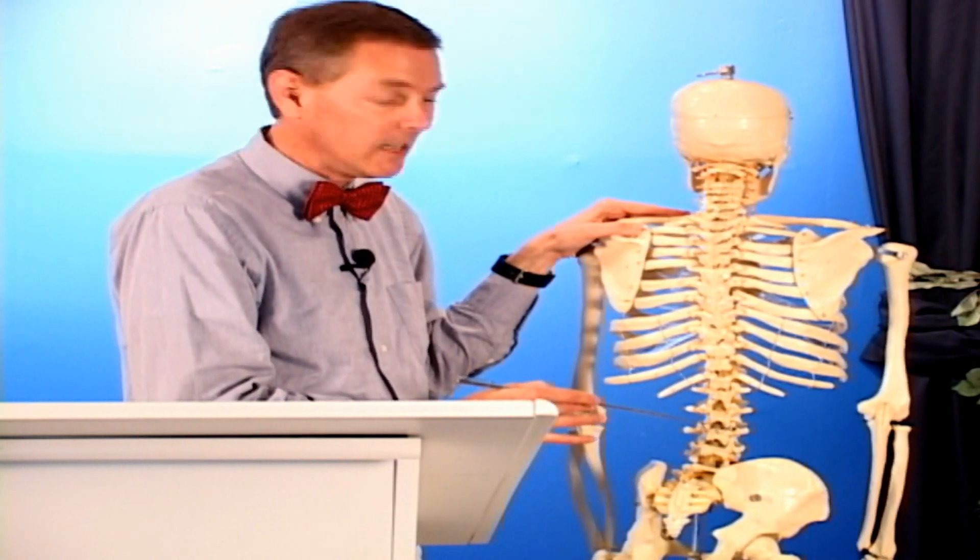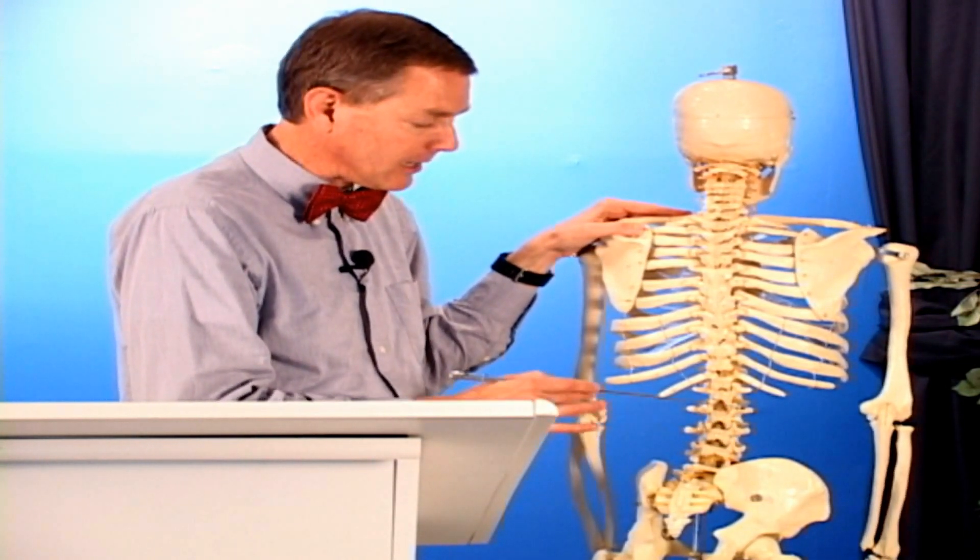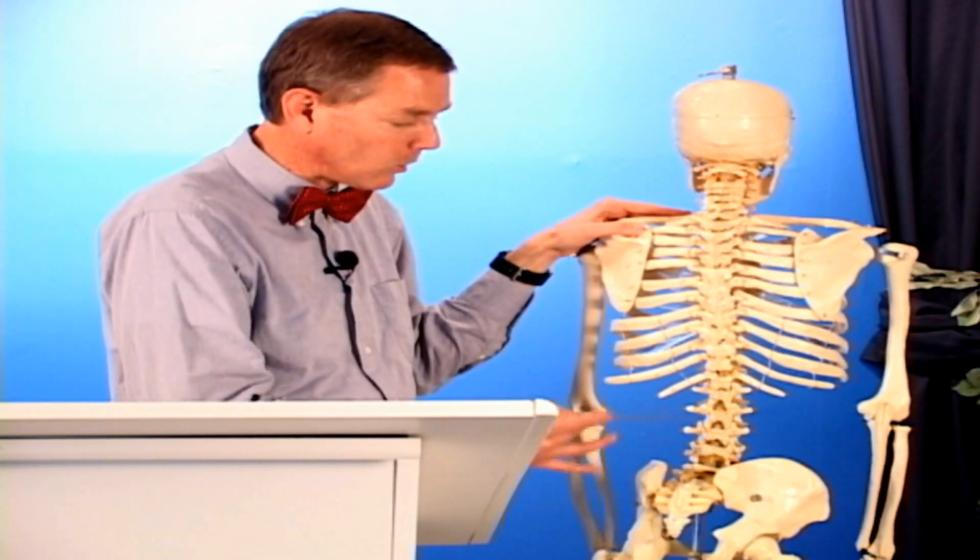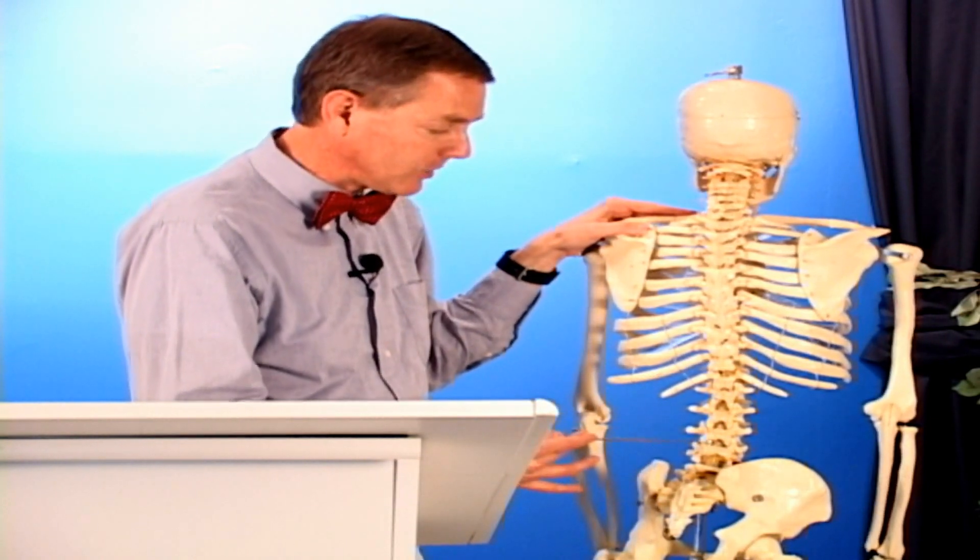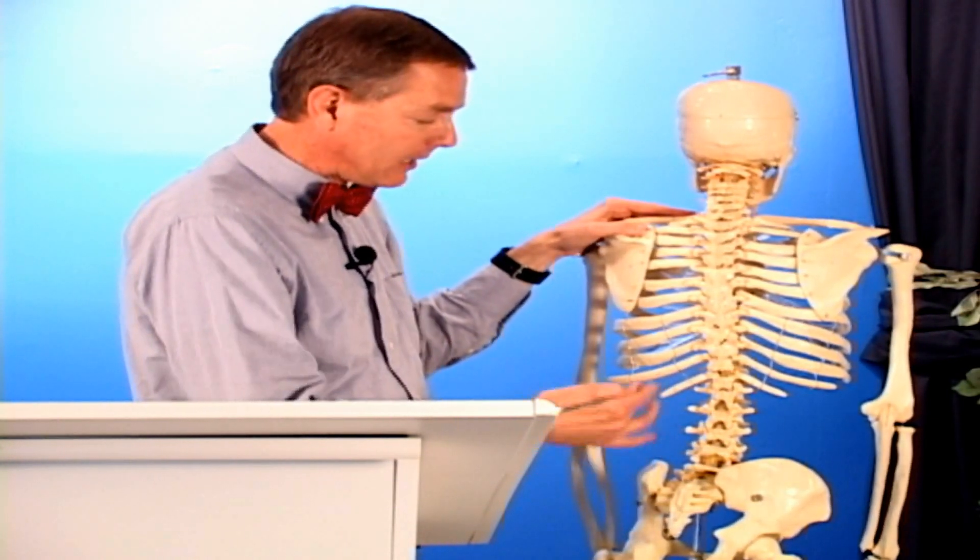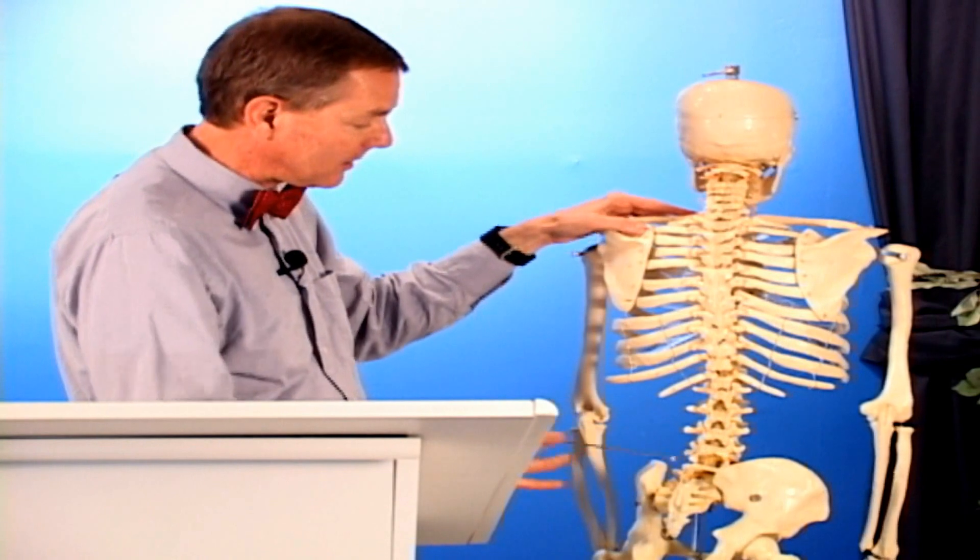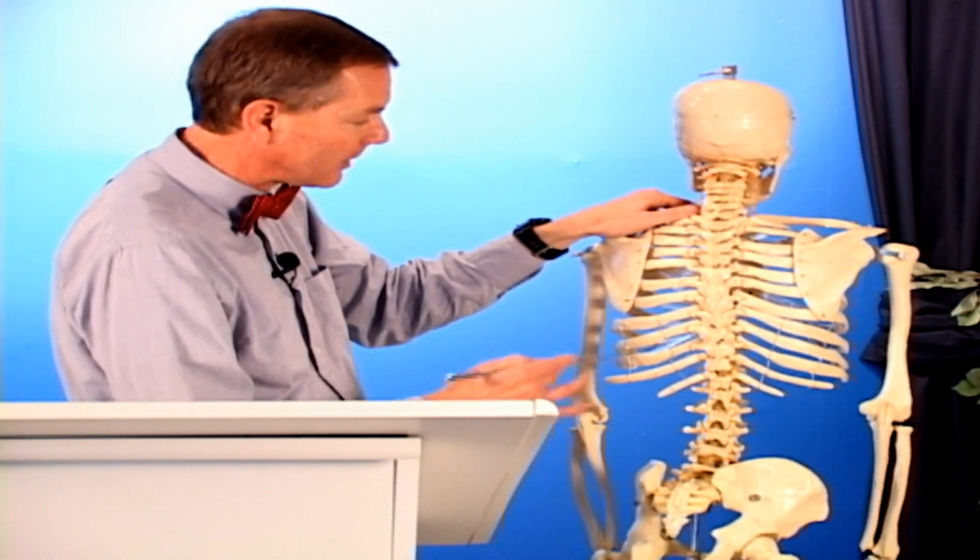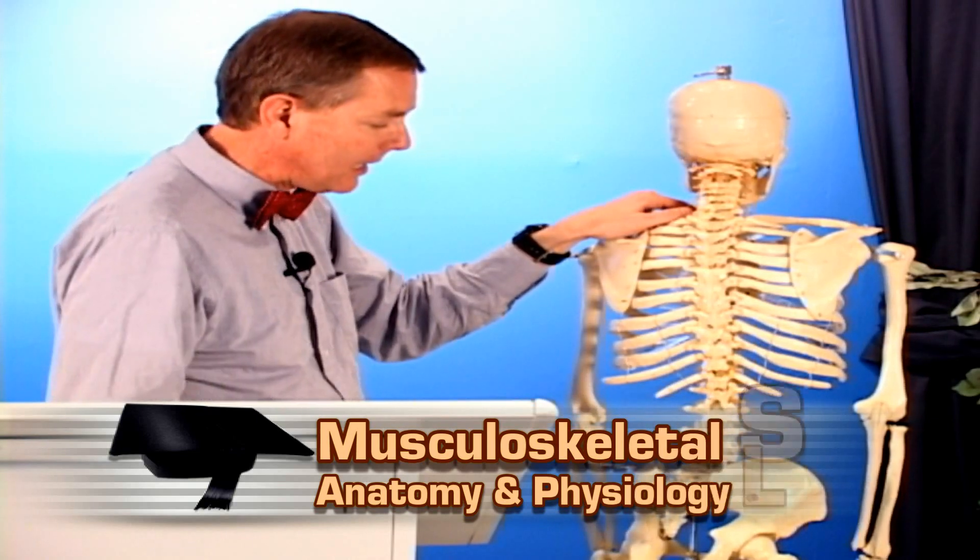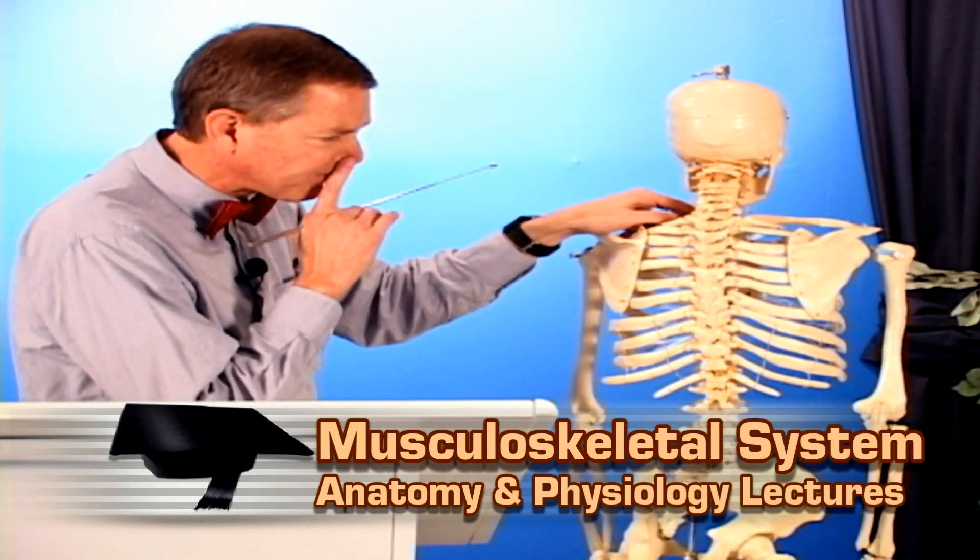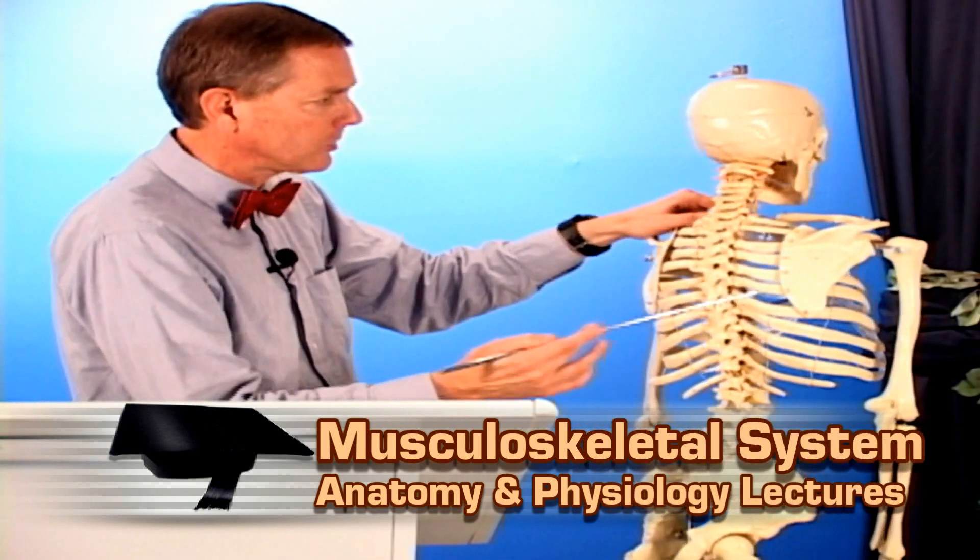The multifidus is a very important core muscle to strengthen the lower lumbar back to prevent ruptured discs and in the recovery of degenerative disc disease. A favorite of mine, it goes all the way up but is very thick and important in the lower spine. Now let's talk about the girdles.